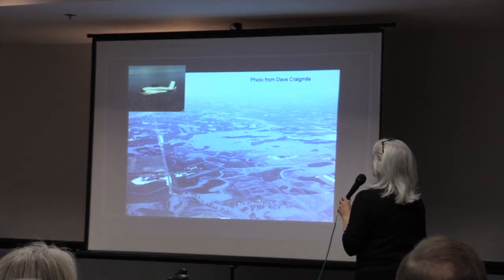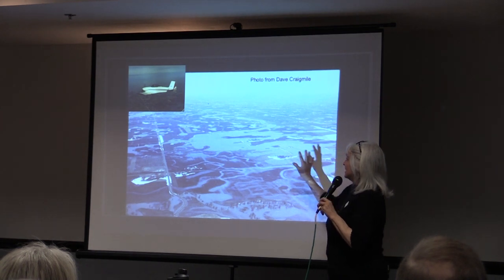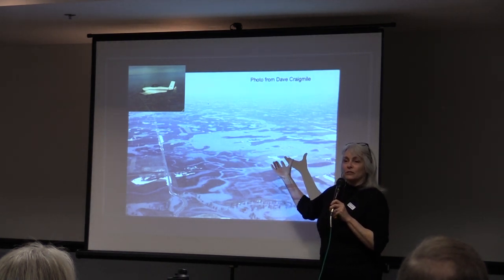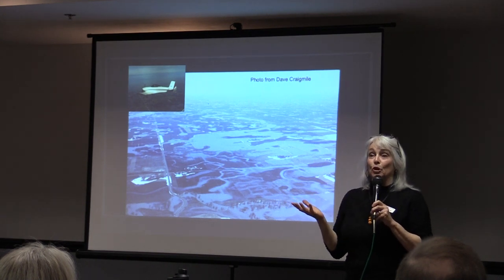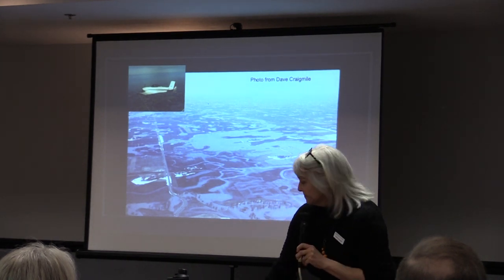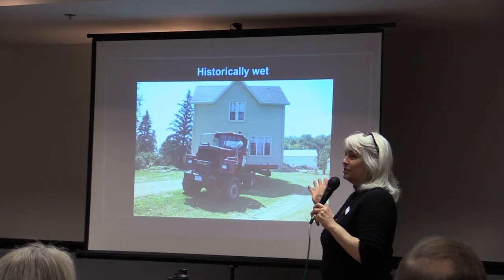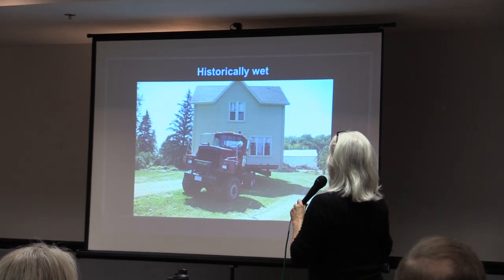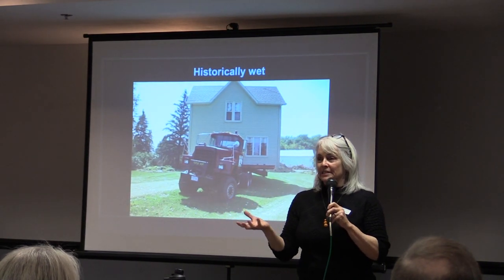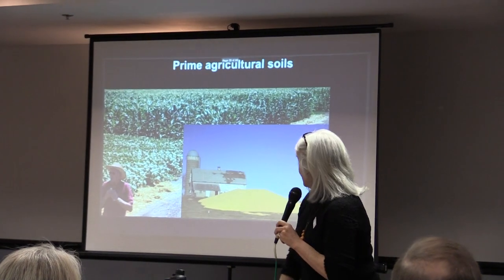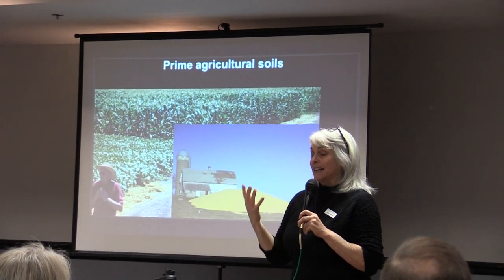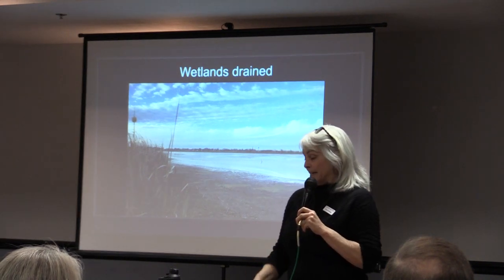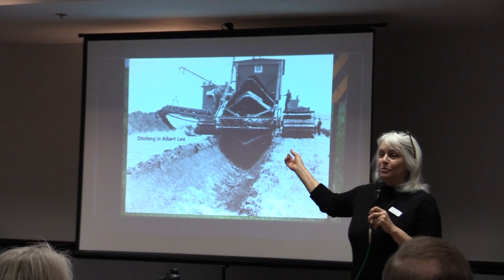Dave Craigmill cared a lot about the Minnesota River watershed, especially around Redwood Falls. This is a photo he took early in the year before the tile had thawed — it was a wet snow year, so there's a lot of water standing at the surface. This is probably what the landscape would look like if it weren't drained. There's a lot of this landscape that is just historically wet and holds water at the surface, and you can appreciate why people wanted to access these prime agricultural soils. So the wetlands were drained.